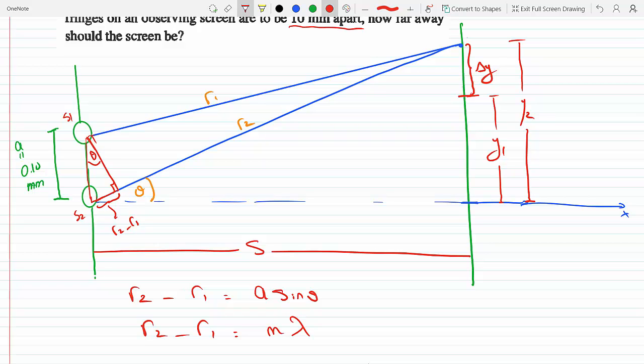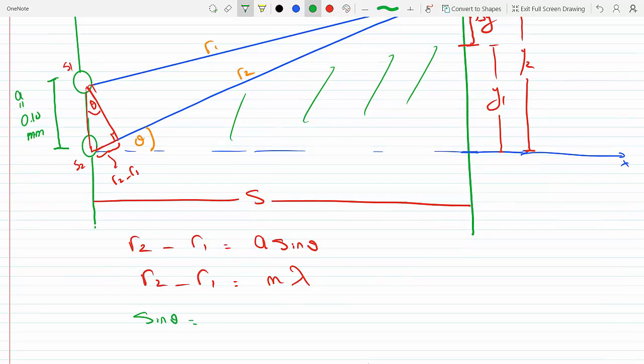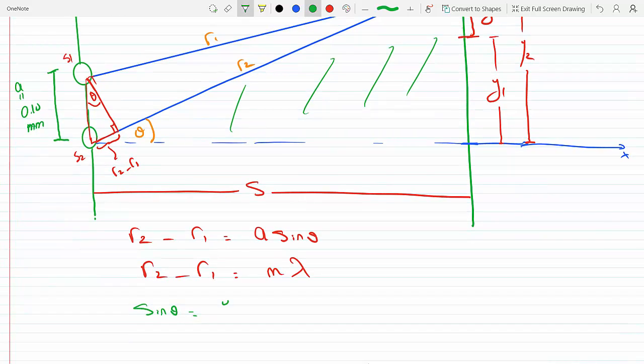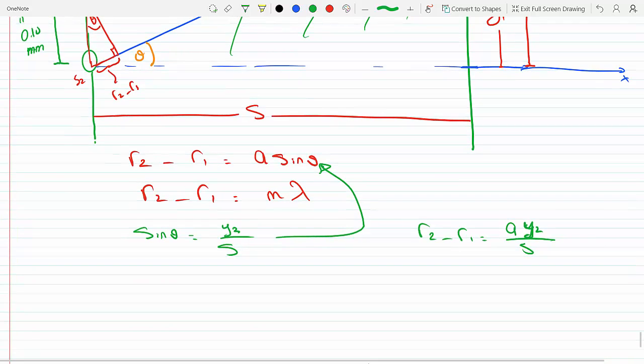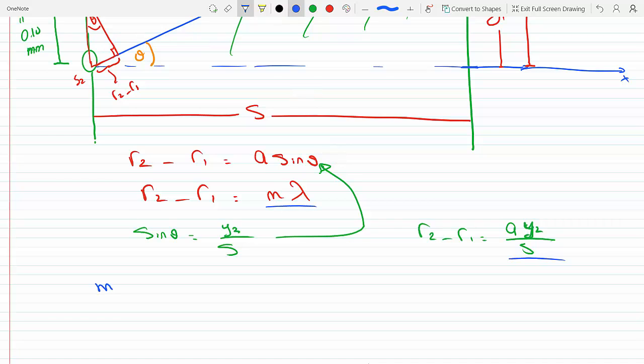At the same time we know that it has to be an integer multiple of the wavelength. Also from this triangle I could see that sin θ equals y₂ over s. If I plug this in, I will get r₂ minus r₁ equals a y₂ over s, and we know that r₂ minus r₁ is m λ, which makes these two the same.